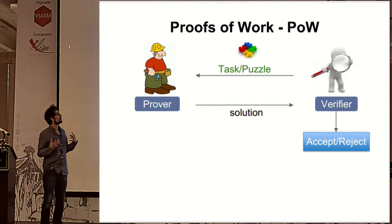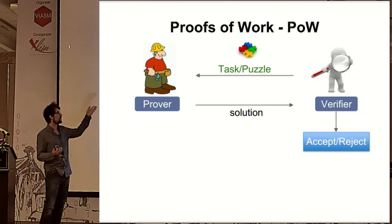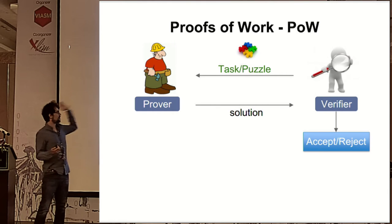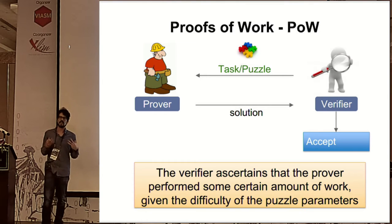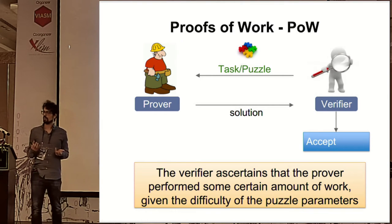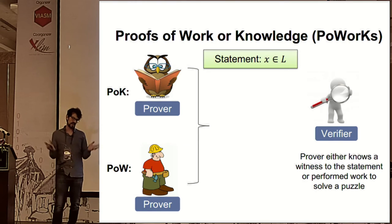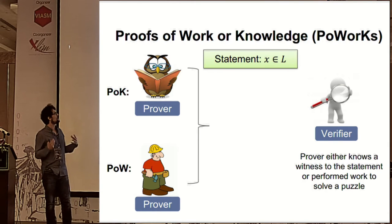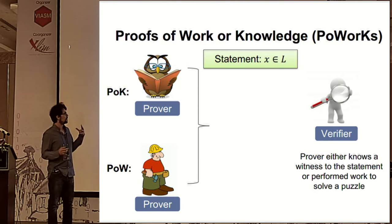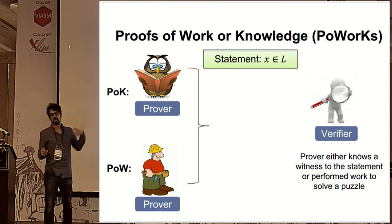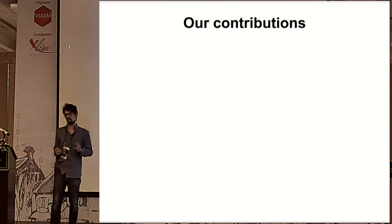What defines a proof of work is via the concept of cryptographic puzzles: a verifier challenges the prover with a puzzle, the prover returns a solution, and if the verifier accepts, it is somehow certain the prover has spent an amount of work, given that the problem is hard. This brought us to the concept we call 'Proofs of Work or Knowledge' (PoWoK), where you prove either you know a witness to a statement or you perform some work, done in an indistinguishable manner.